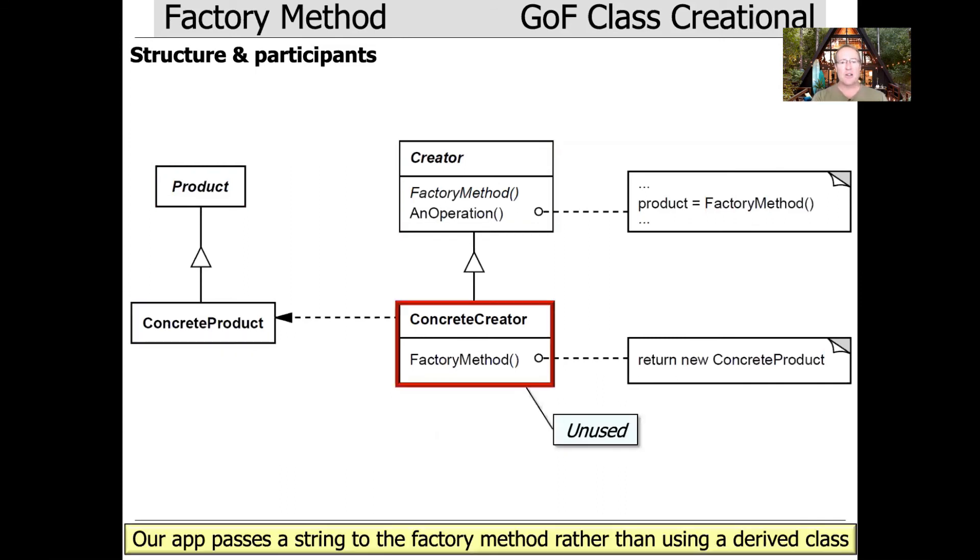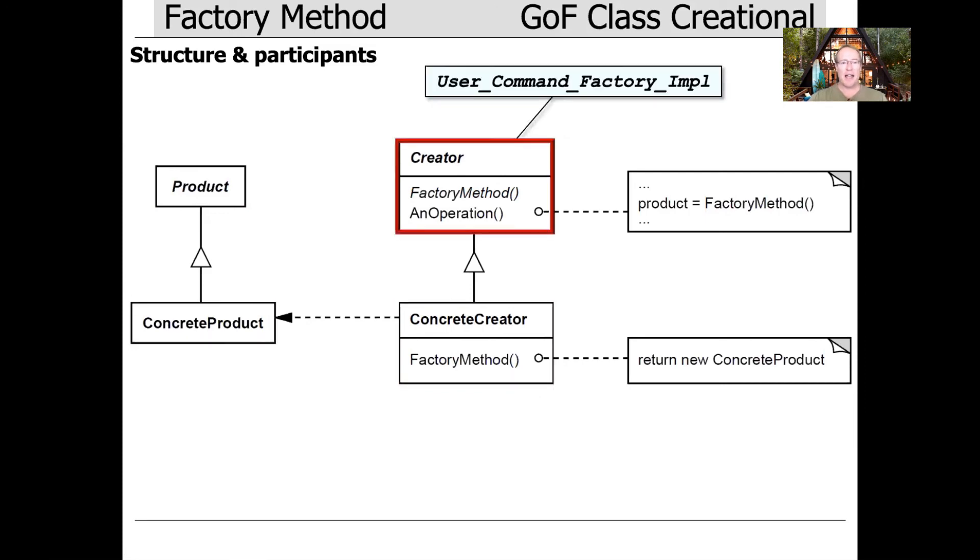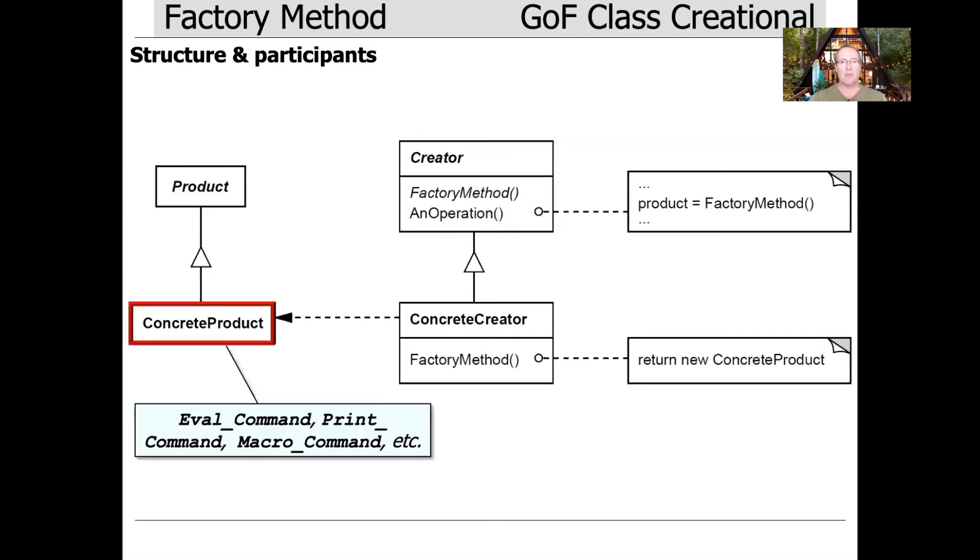And then there's also this thing called concrete creator, which you use if you implement the canonical Gang of Four disclosed preferred embodiment variant of the pattern. But our app doesn't do it this way. We pass in a string to the creator's factory method, this guy up here, and have it make the appropriate concrete product.